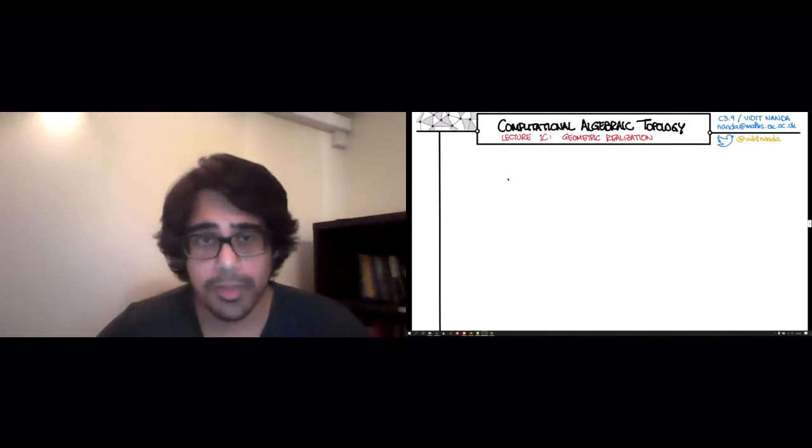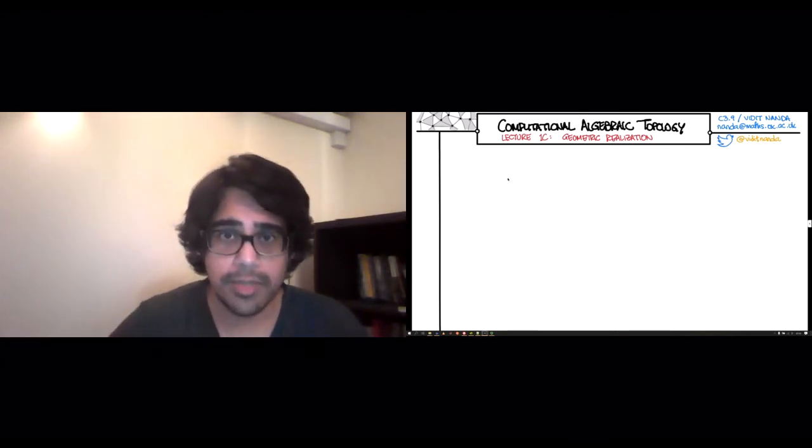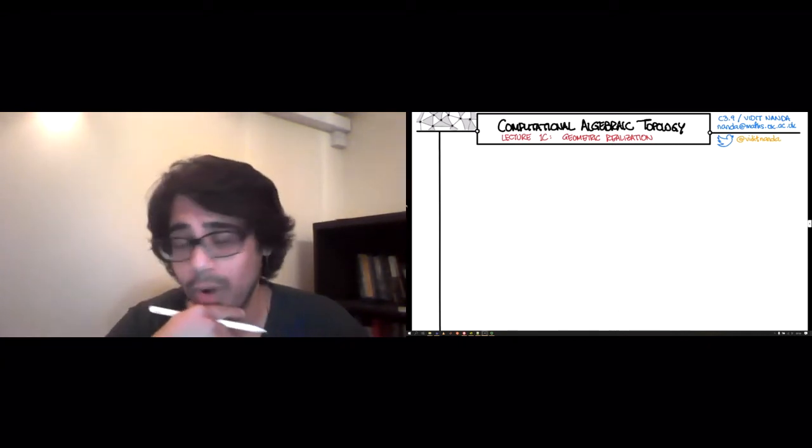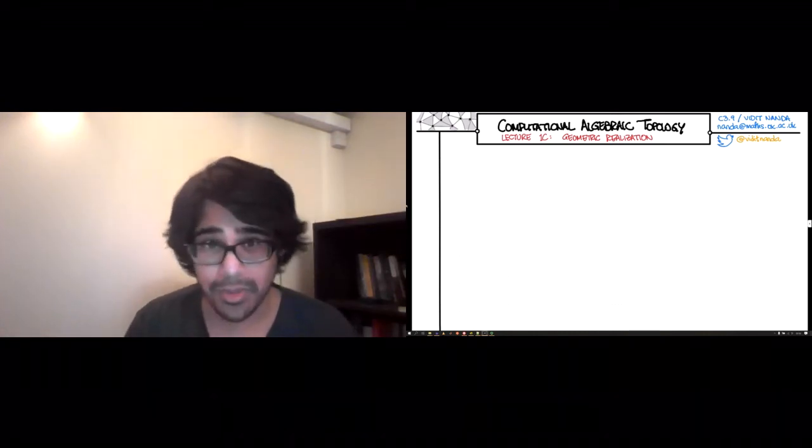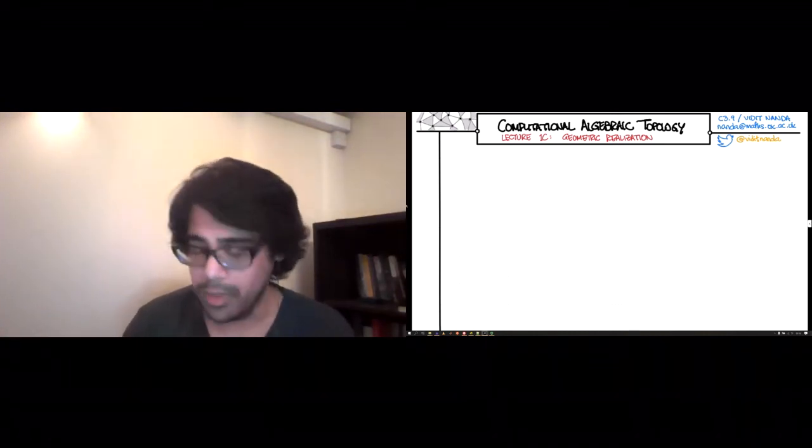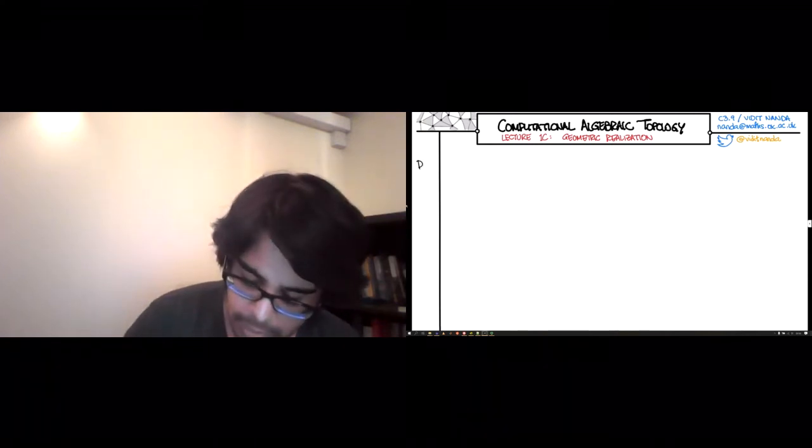At the beginning of this course, you were promised a bridge from combinatorics to geometry. It is now time to build that bridge and walk over to the other side. Let's start with the sort of geometry that we will end up with. So here's a definition.